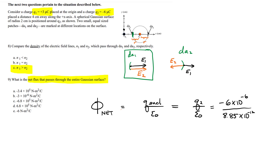6 times 10 to the minus 6 divided by 8.85 times 10 to the minus 12 gives me 6.8 times 10 to the 5. The best choice has to be negative because the charge is negative — I think it's choice C. Pretty straightforward. The first one seems a bit odd — we haven't maybe seen that style of question — but the density of field lines is related to the strength of the field.